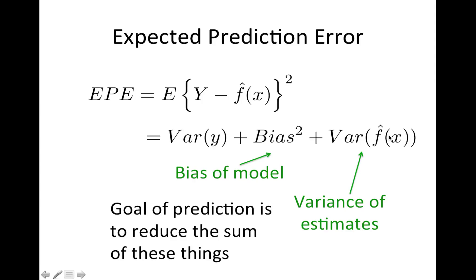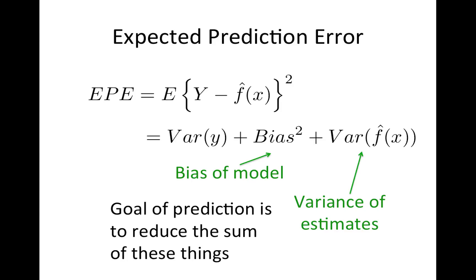They have the smallest variance among all unbiased estimators. So it means this bias is zero and within the models that have a zero bias it has the smallest variance. That doesn't necessarily mean it's the smallest overall variance, it's just the smallest variance within unbiased models. The goal of the explanatory model is to reduce this bias to zero. On the other hand, with prediction you want to reduce this sum as much as possible.